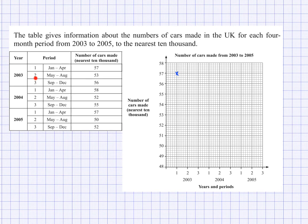In the second season of 2003, the value was 53. Notice that I've also got second season of 2004 and second season of 2005 — I'll explain more about those afterwards. So that's the second season of 2003 plotted. Then we have the third season of 2003, which is 56.